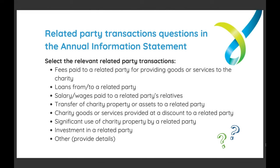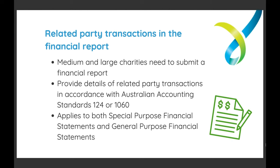If a charity does have reportable related party transactions, what information do they need to provide? If you didn't have any, you can just answer no and move on to the next section of the AIS. But if your charity had a reportable related party transaction during the reporting period, answer yes and select the relevant transaction types from the list. The last option for 'other' lets you type in the transaction type if it doesn't fit the listed categories. If the charity chooses, it can also provide additional relevant details — for example, the page number in your financial report where the related party transactions are disclosed.